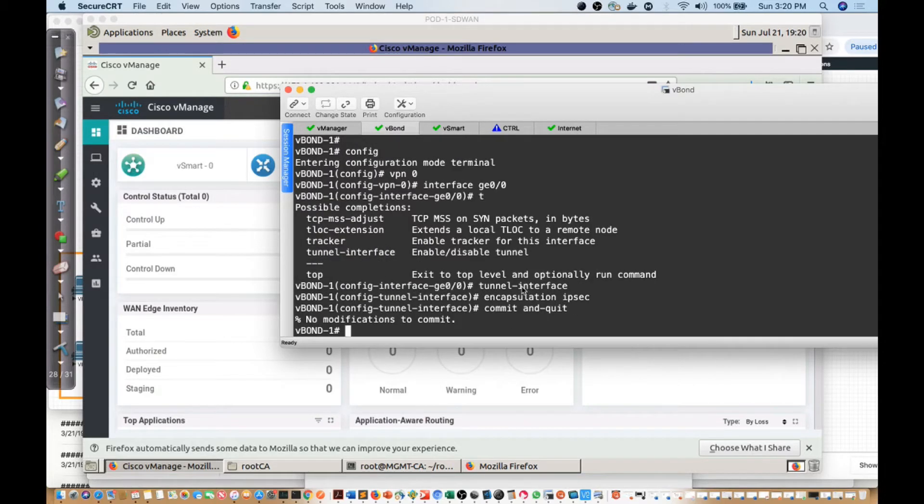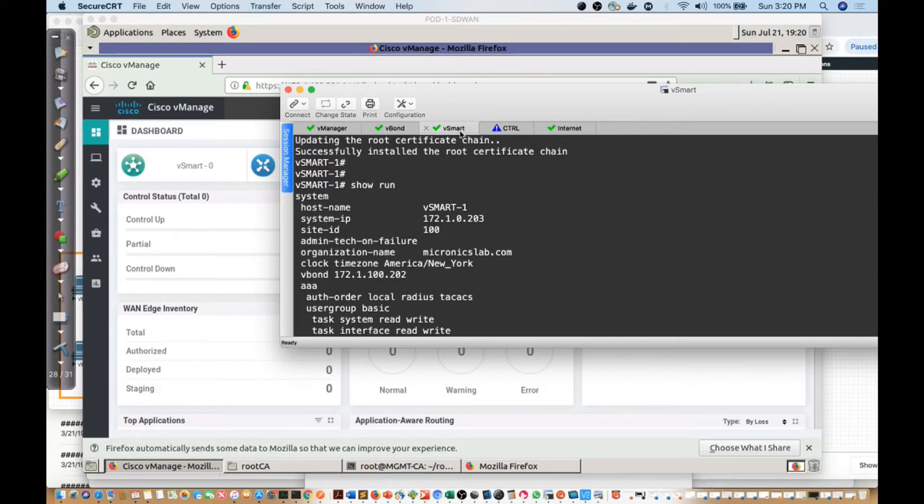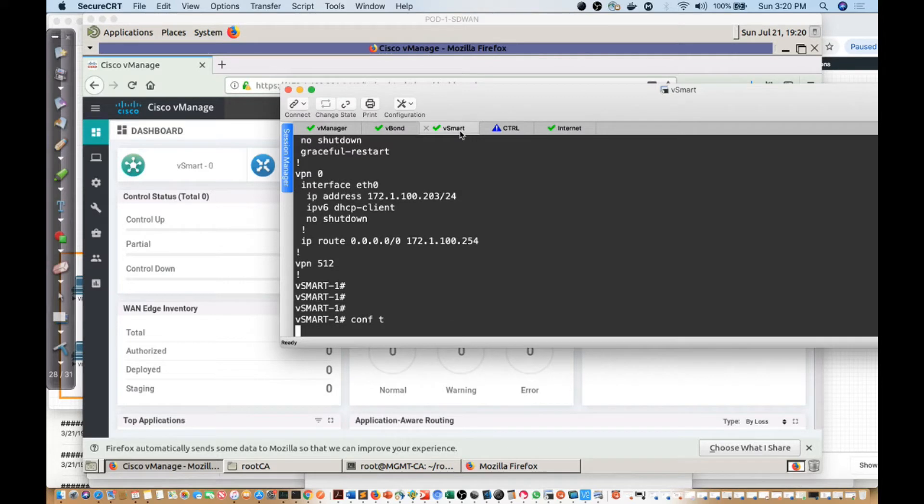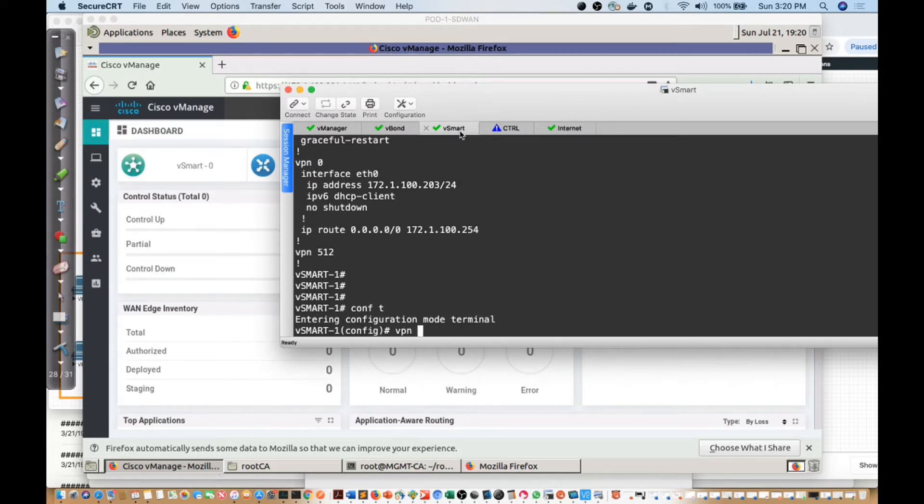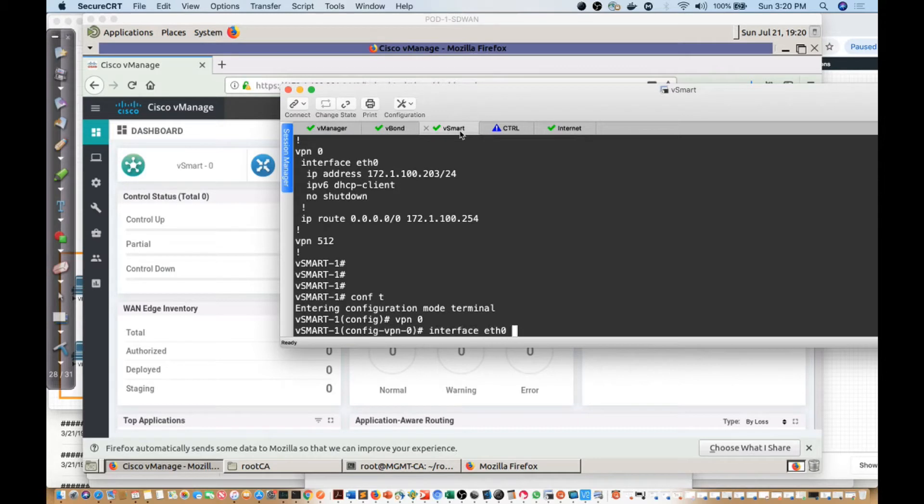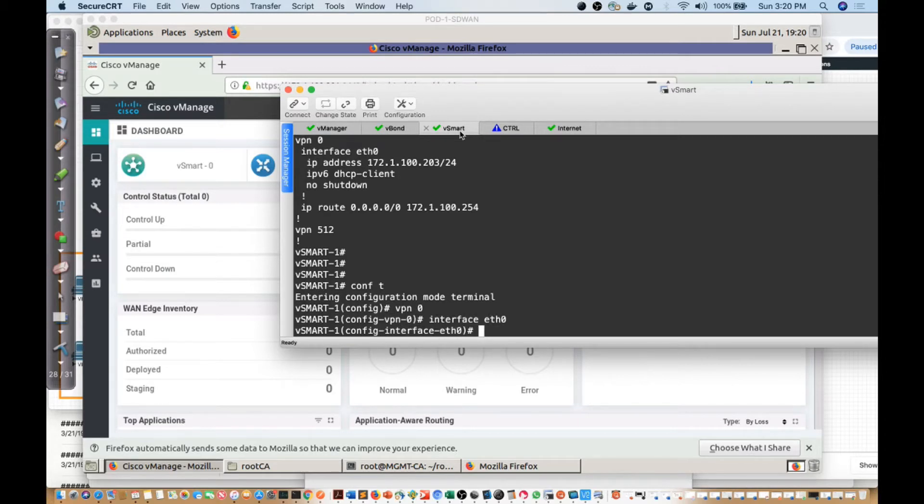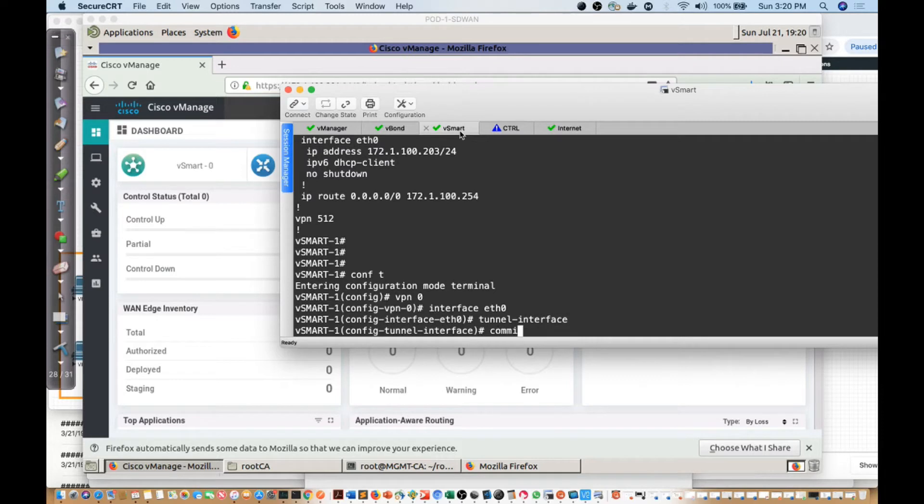Let's take a look at the vSmart. We'll say config T, VPN 0, interface Ethernet 0, and we will say tunnel interface. Then commit and quit.